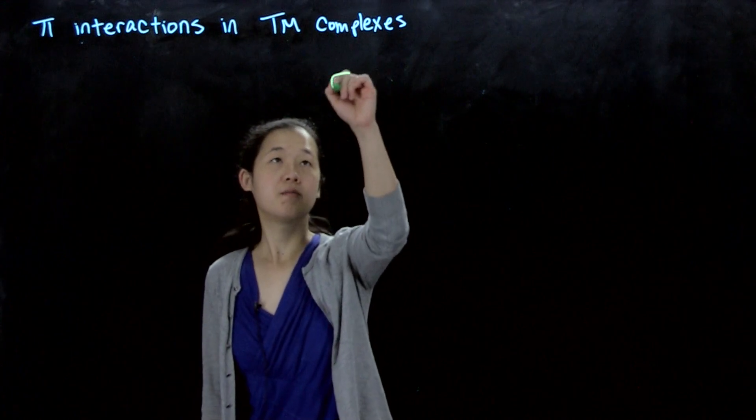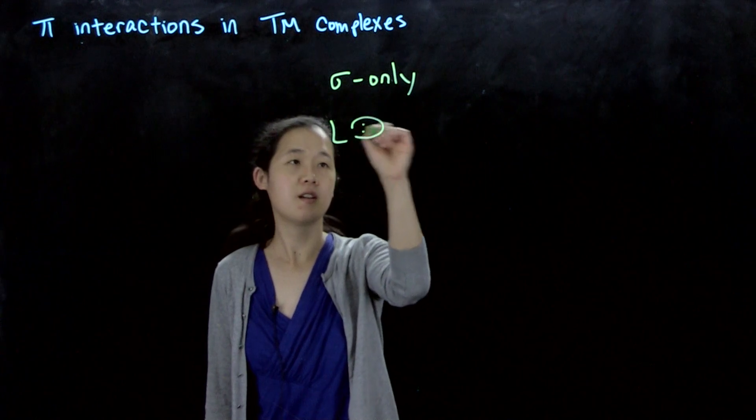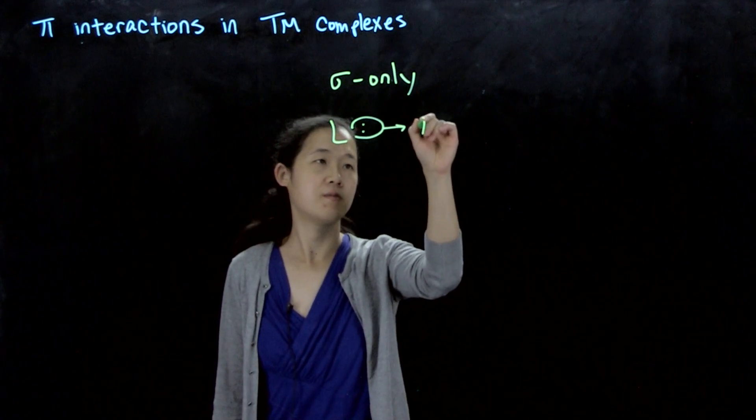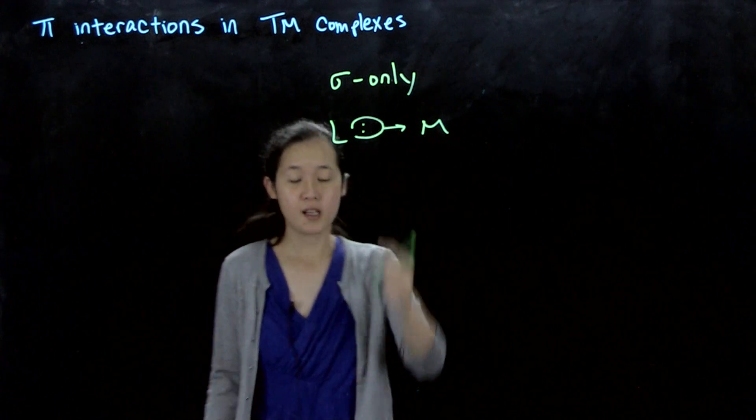We talked about sigma-only, and that interaction is if we have a lone pair donating to the metal. Sigma-only, because it's symmetric, cylindrically, about this ligand-metal bond.